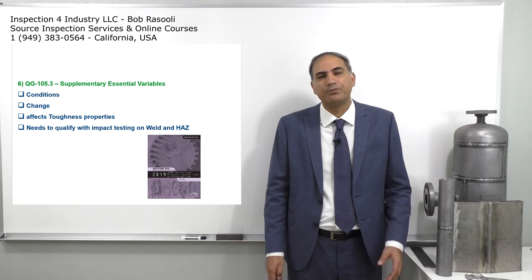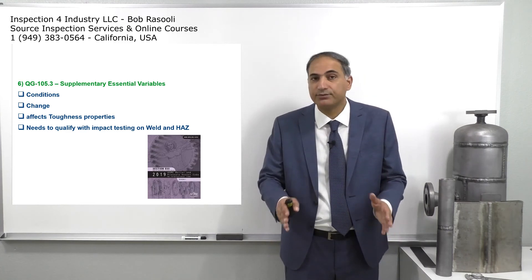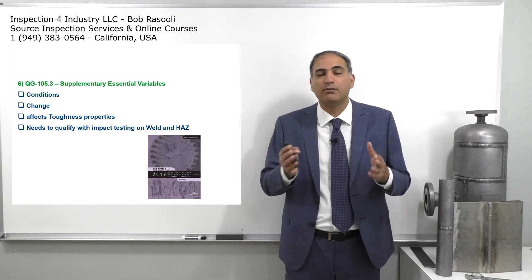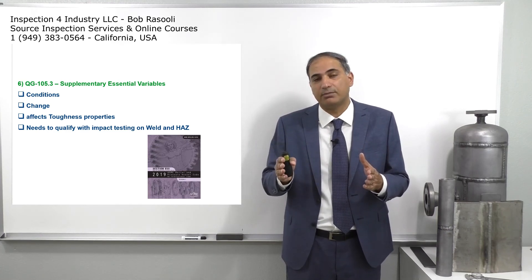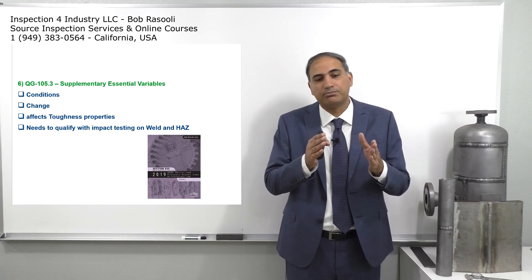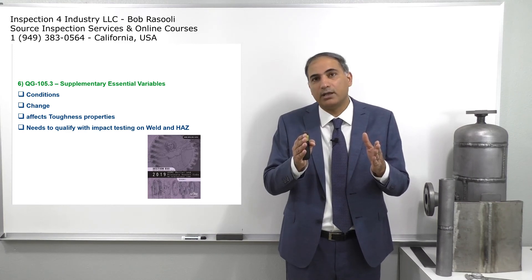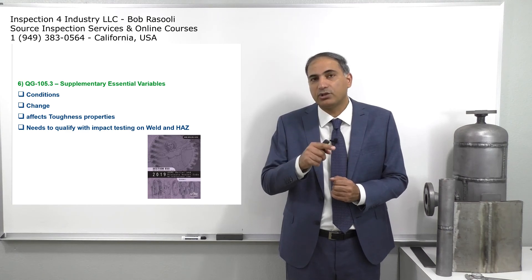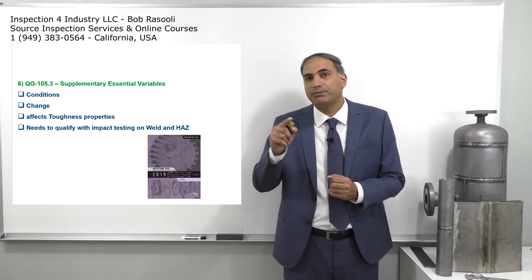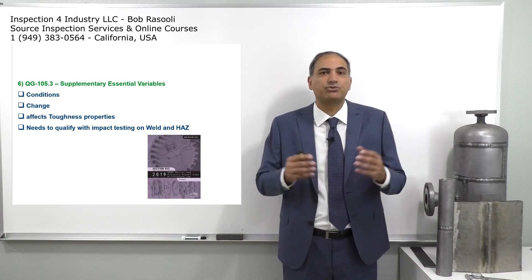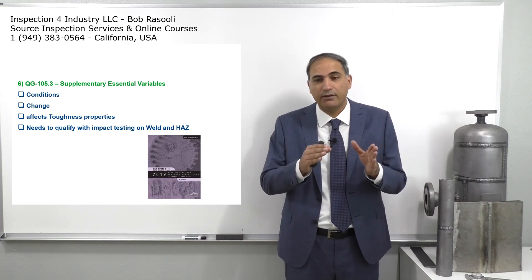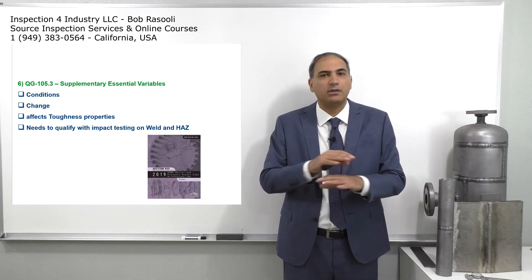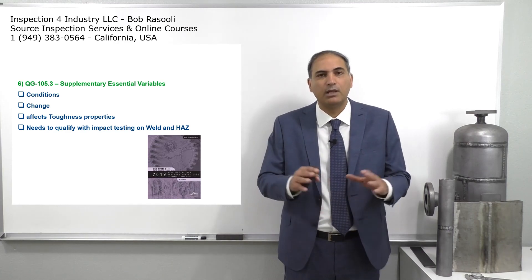The next thing to discuss: WPS variables often come with a range. For example, wall thickness normally comes with a range, and depending on the test coupon, you set that range. If you go beyond the range, it becomes an essential variable. Like if you have a WPS covering up to a maximum of one inch, and you get a new job with one-and-a-half-inch material, you can't use that WPS — you have to write a new WPS, make a new test coupon, and requalify. It's not always black and white — within the range it's non-essential, but if you go beyond the range it becomes essential. We'll have lots of examples for this, so don't get confused as we proceed.